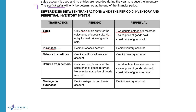For purchases: in the perpetual system you debit the inventory account; in the periodic system you debit the purchases account. For returns to creditors: in the perpetual system you credit inventory to reduce the asset; in the periodic system you credit creditors' allowances. The purchases account and creditors' allowances account together represent the net expense for purchases. At year-end, creditors' allowances will be transferred to the purchases account to determine the total cost.